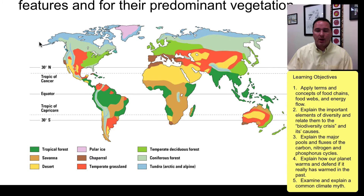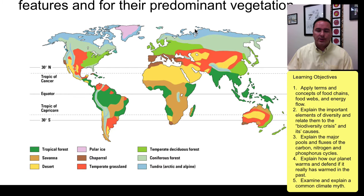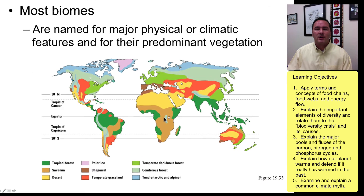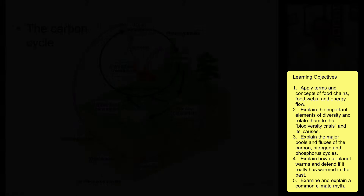Combining the equator-to-pole temperature gradient with land formations like mountains explains all the different biomes across the planet. The tundra and arctic are found at the poles but also at high elevations on mountaintops. Tropical forests are found around the equator, but not everywhere — areas deep inland in Africa may not receive enough rainfall to qualify.